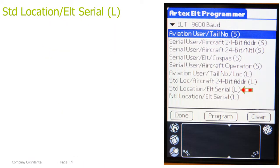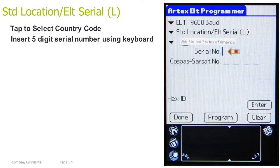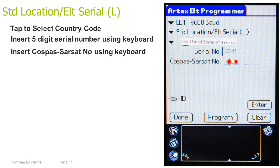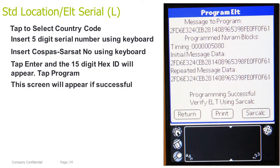Standard location ELT serial long. Tap to select a country code. Insert the 5-digit serial number using the keyboard. Insert the Cospas-Sarsat number using the keyboard. Tap Enter and the 15-digit HEX ID will appear. Tap Program. This screen will appear if successful.